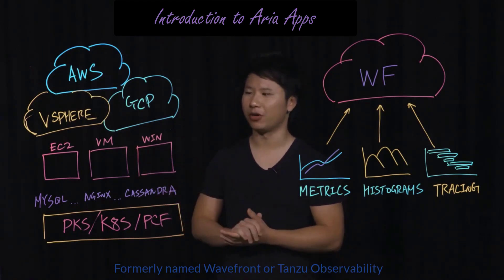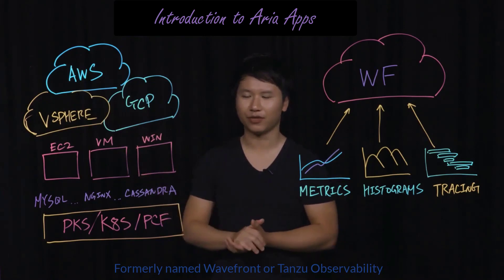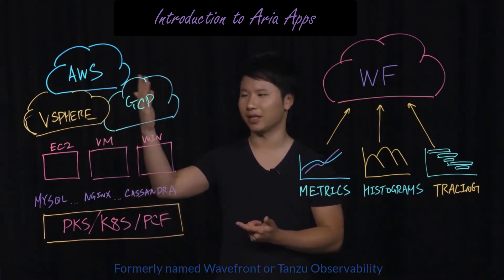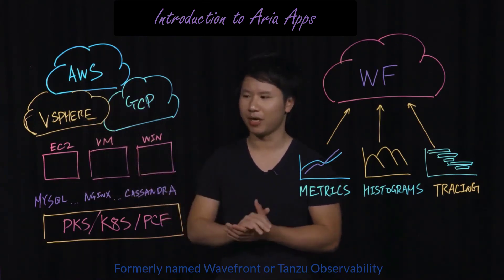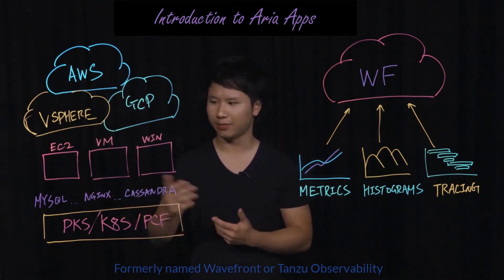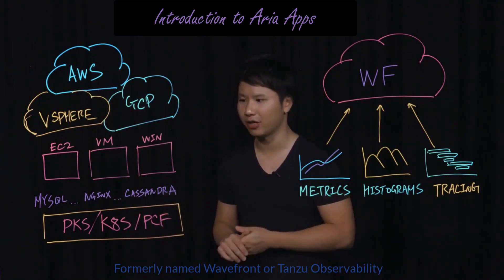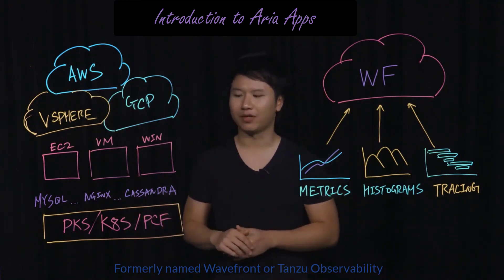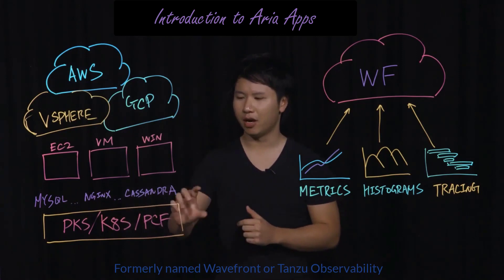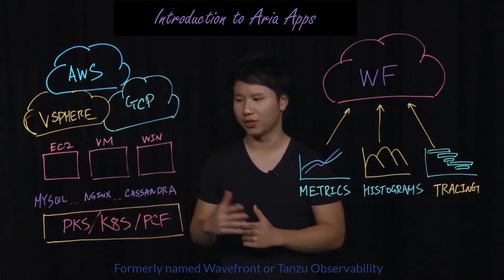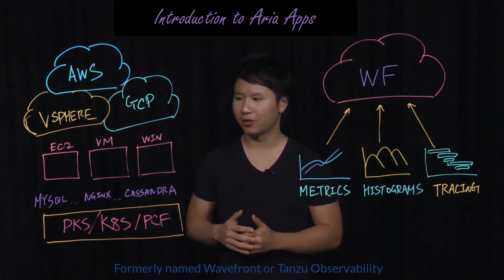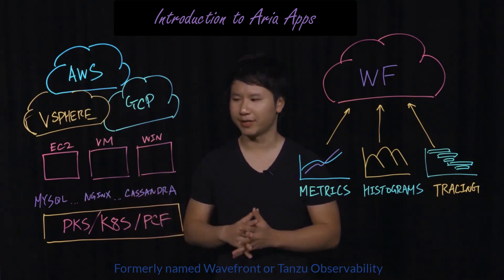We have customers that are using traditional VMs in a vSphere context, as well as people running in Windows, in EC2 environments, as well as in GCP. We have customers that are using components to build their software, things like MySQL, Nginx, or Cassandra, and we have tons of customers that are now embracing the industry trend of relying on PaaS services such as Kubernetes, PKS, or PCF to handle all of their orchestration and scaling needs.